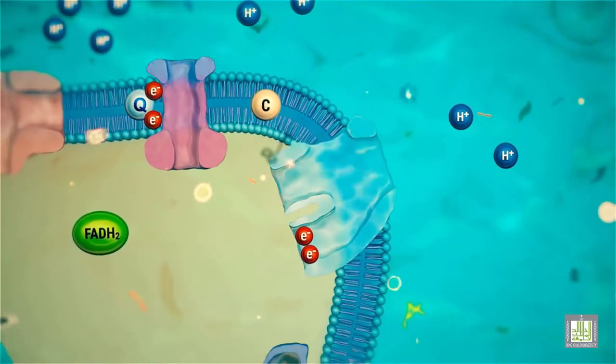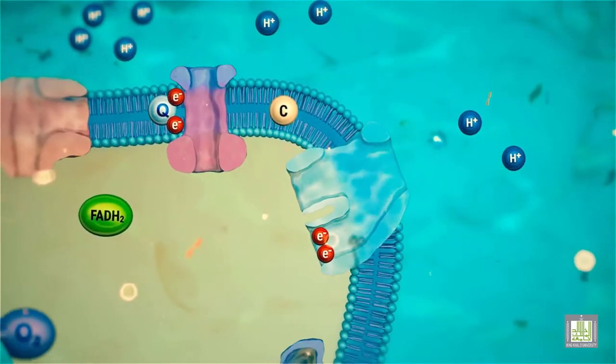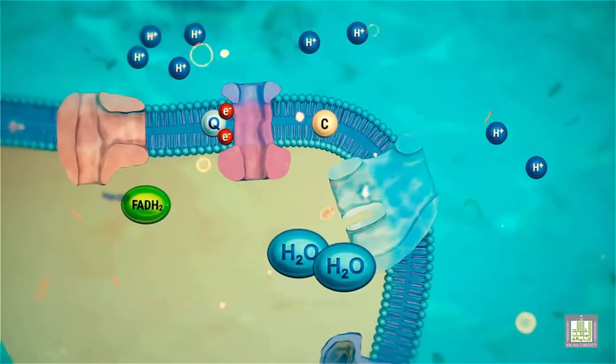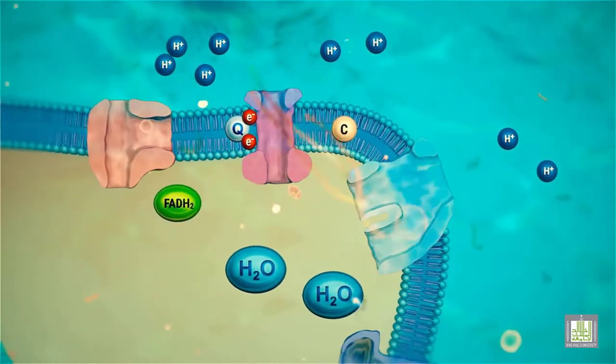The cytochrome oxidase complex then transfers electrons from cytochrome C to oxygen, the terminal electron acceptor, and water is formed as the product.